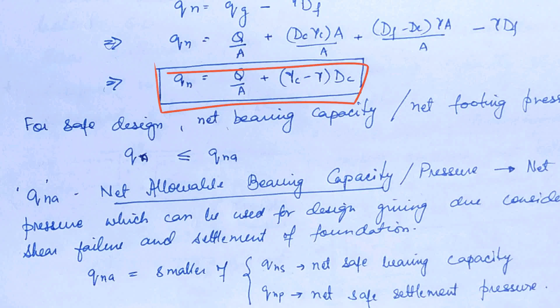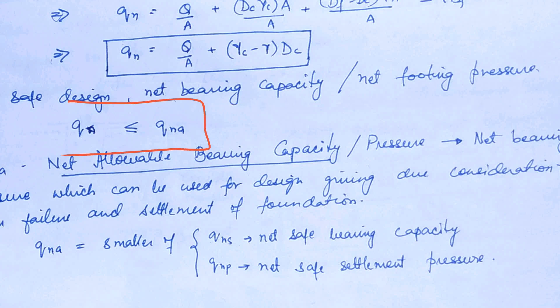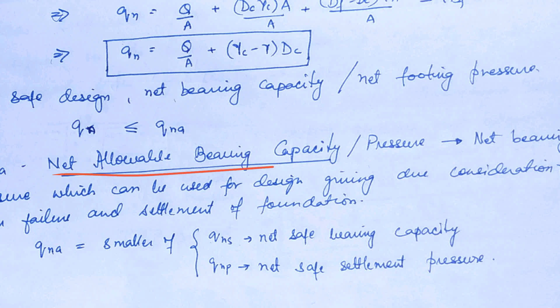For safe design, we do not take this net bearing capacity and design solely on the basis of it. For safe design, the net bearing capacity or net footing pressure should always be less than or equal to Q_NA — the net allowable bearing capacity. We must note that Q_N is always less than or equal to Q_NA. Let's see what we mean by net allowable bearing capacity, also written as net allowable bearing pressure.